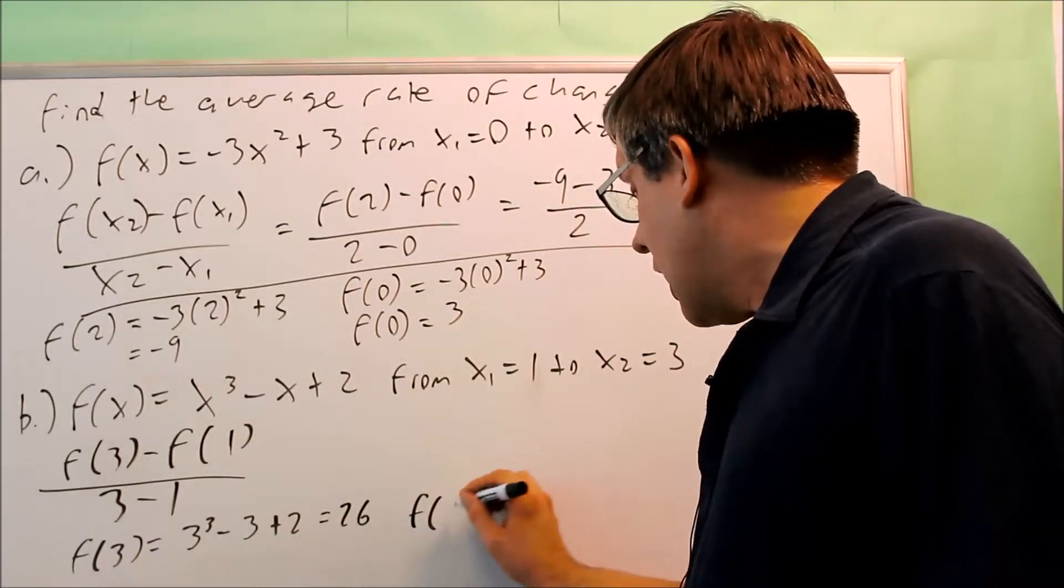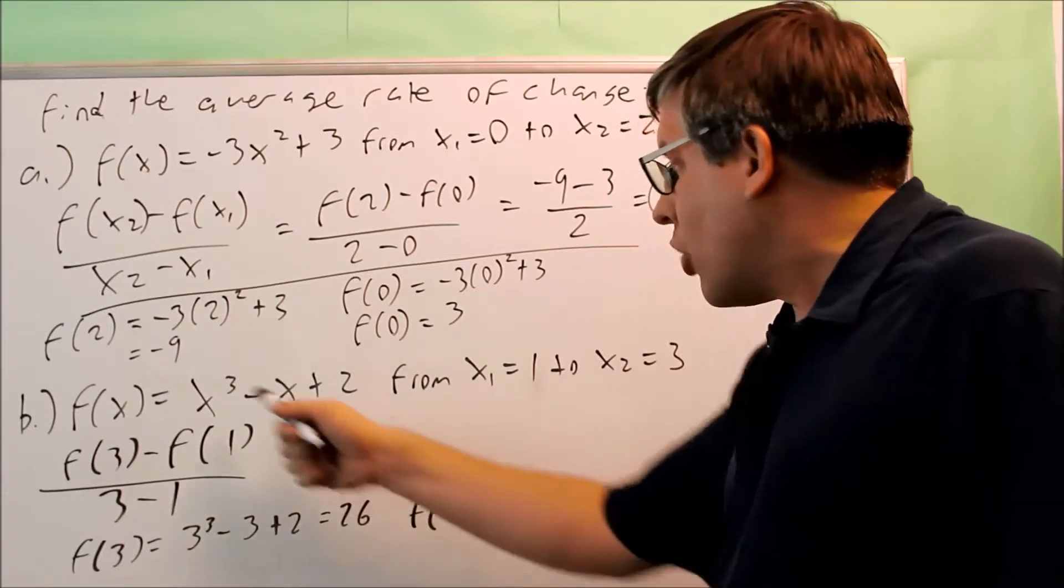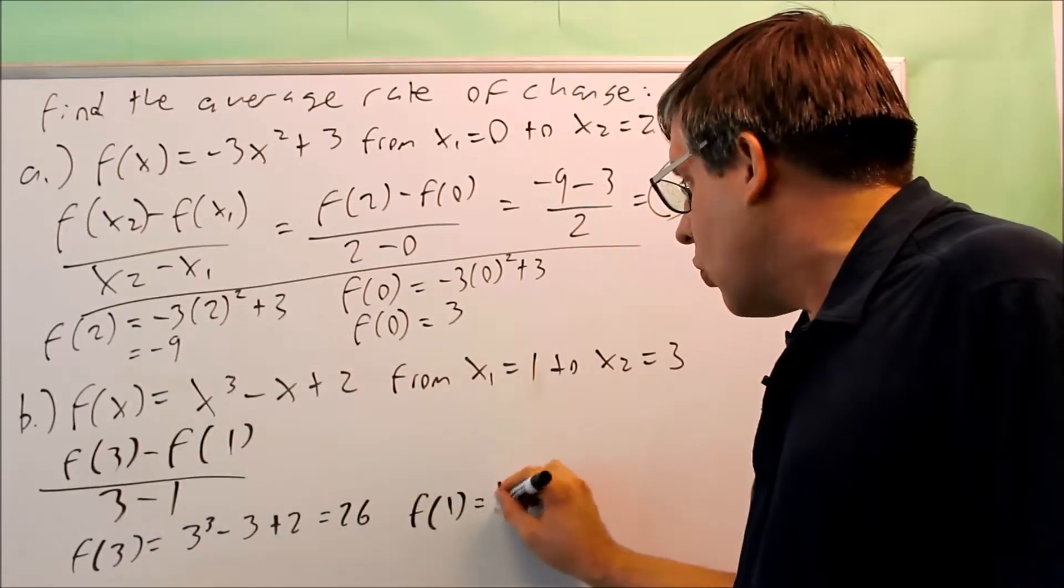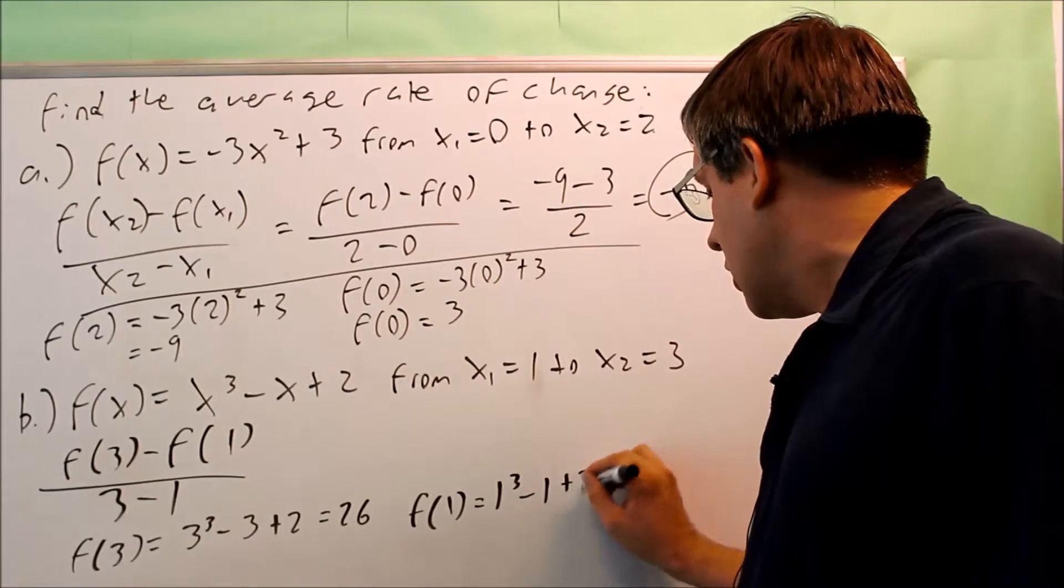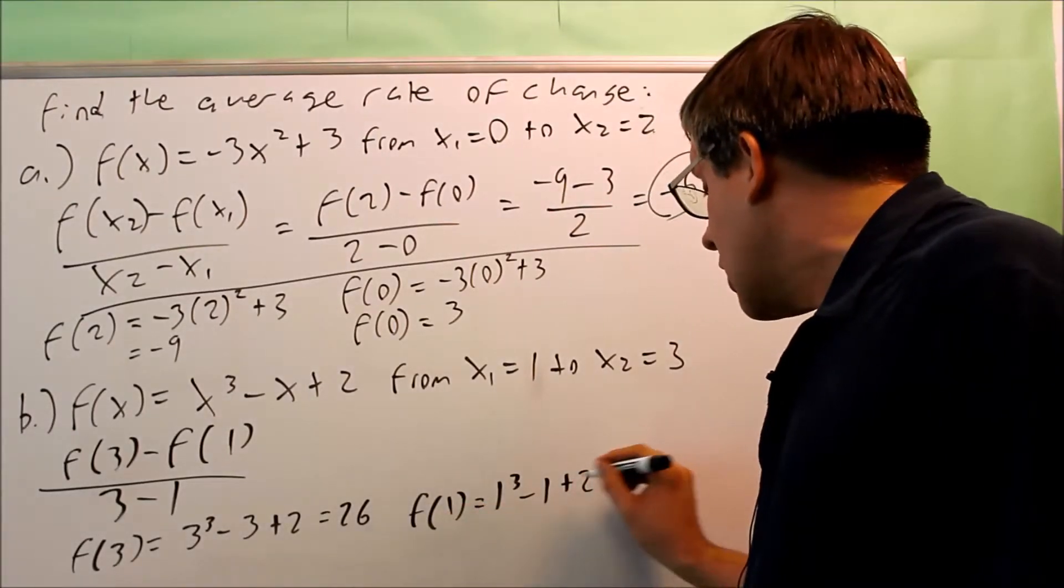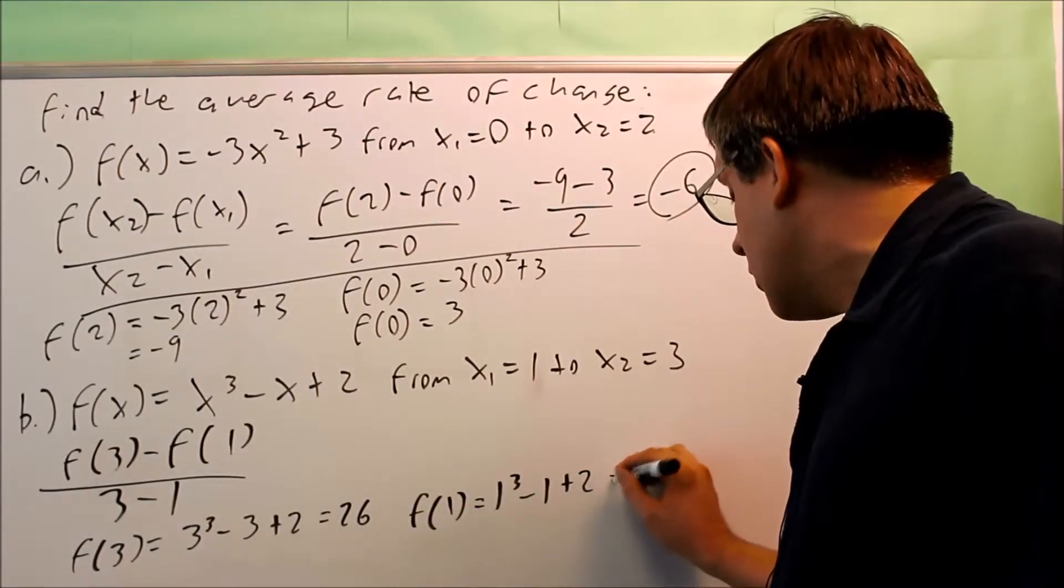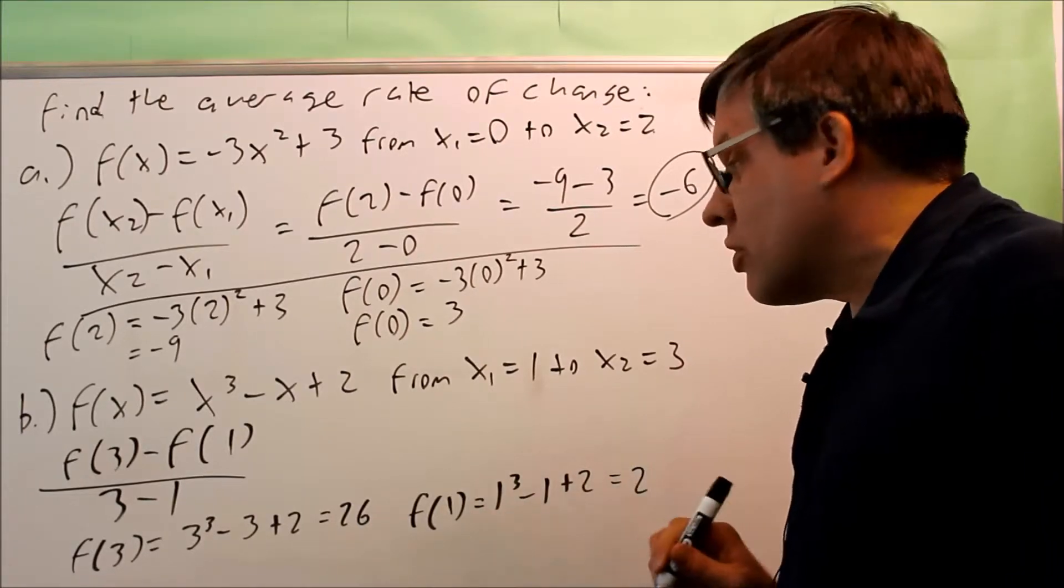Now let's do f of 1. f of 1 we put in for both the x's, 1 cubed minus 1 plus 2. That's going to give you 0 there and then plus 2 means that f of 1 is equal to 2.